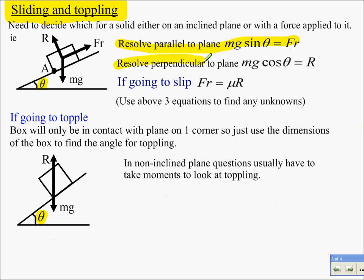Your tactics are resolve parallel to the plane, resolve perpendicular to the plane. And then, this key fact here, if it's going to slip, friction will be maximized. So friction's mu R. Between those three little puppies there, you can find whatever unknowns you need to from the question.